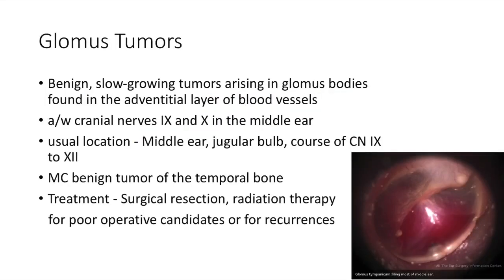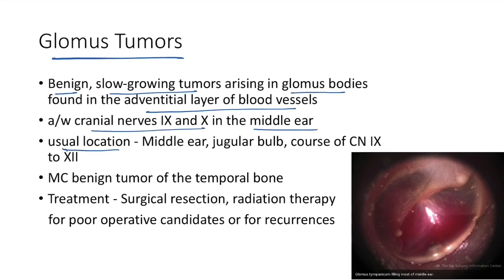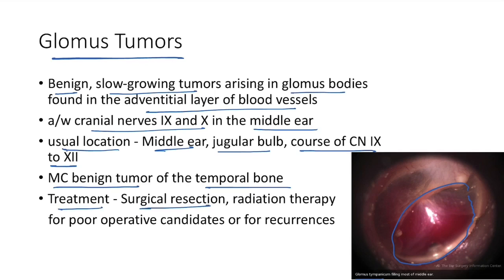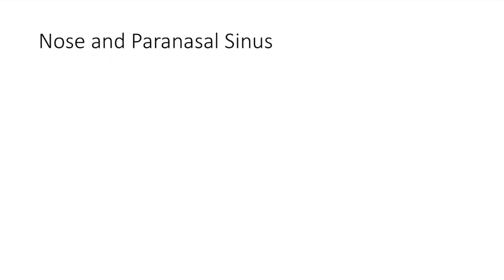Glomus tumors are benign slow-growing tumors arising in glomus bodies found in the adventitial layer of blood vessels. They are associated with cranial nerves 9 and 10. The usual location is the middle ear and jugular bulb in the course of cranial nerves 9 to 12. It is the most common benign tumor of the temporal bone, also known as glomus tympanicum. Treatment: surgical resection; radiation therapy for poor operative candidates or recurrences.